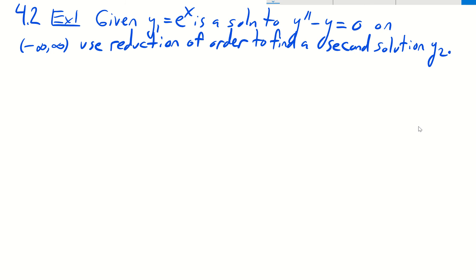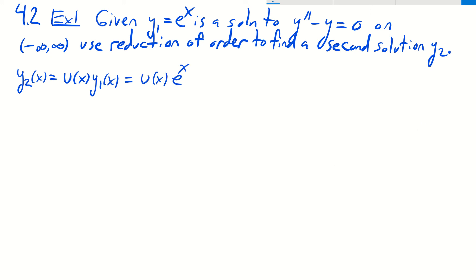In example one, suppose we're told that y₁ = eˣ is a solution to y″ − y = 0 on the real numbers. Let's use reduction of order to find a second solution y₂. To start, we're going to suppose that y₂(x) = u(x)·y₁(x) — that is, y₂ = u(x)·eˣ. We now want to substitute this into our differential equation.